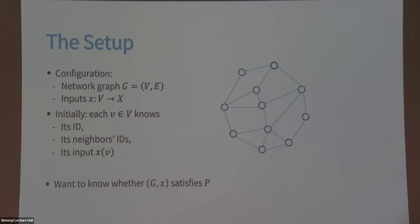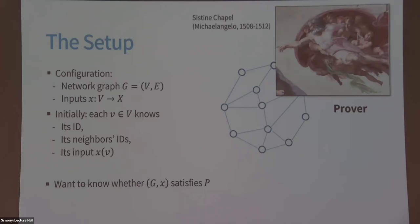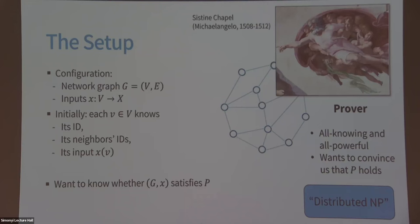The goal is to verify that some global property of this configuration holds. Even though every node only has an extremely local perspective, I still want to check some global property of the entire network. Obviously, I won't be able to do this without communication among the nodes. In this model, we have help from an all-powerful prover — an all-knowing entity that can see the entire network, unlike the individual nodes. It wants to convince us that the property holds. This is like a distributed version of NP: the prover wants to make you say yes, even when you should say no.